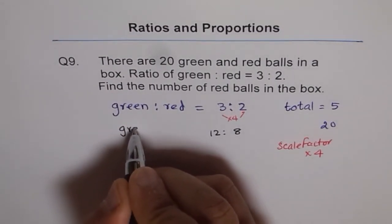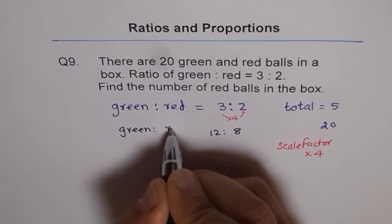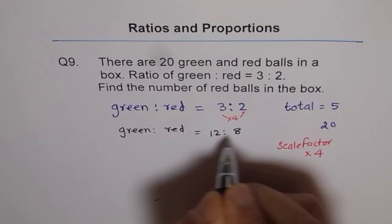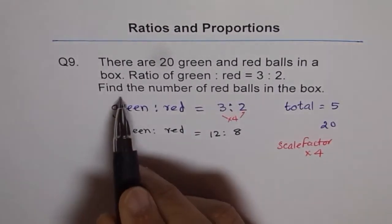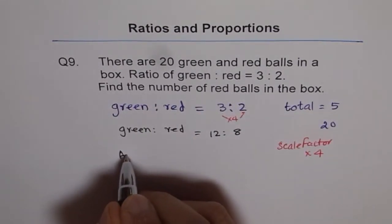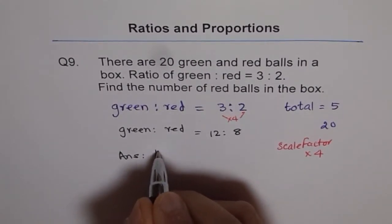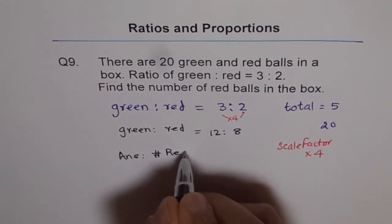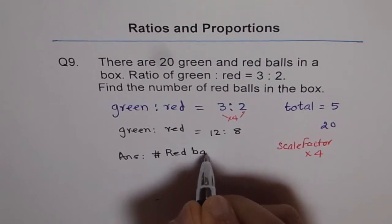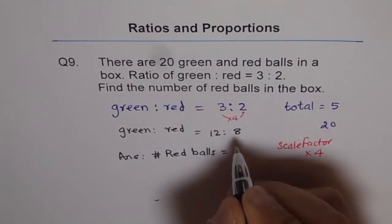And therefore the ratio of green and red balls should be 12 is to 8. So find the number of red balls in the box. And therefore our answer is number of red balls equals 8.